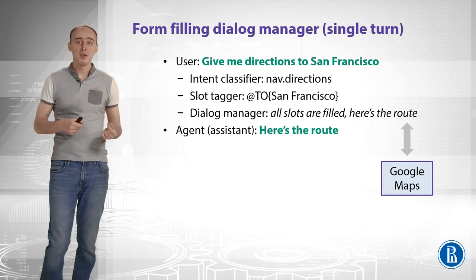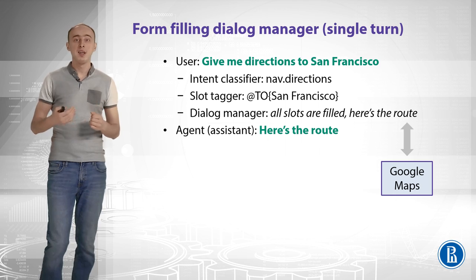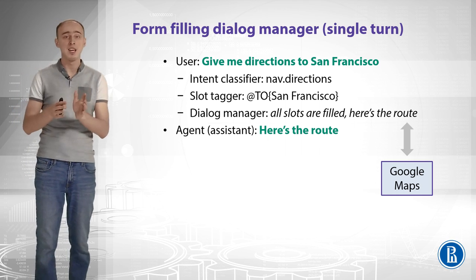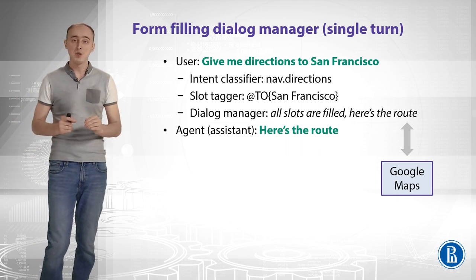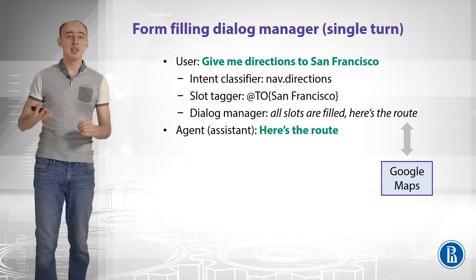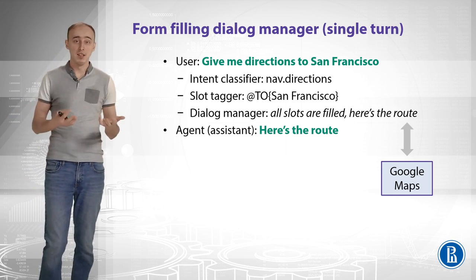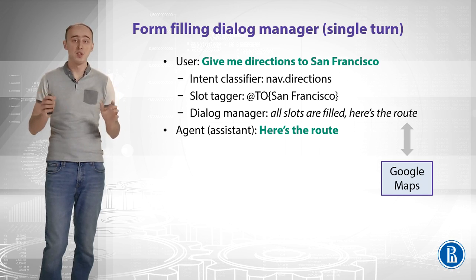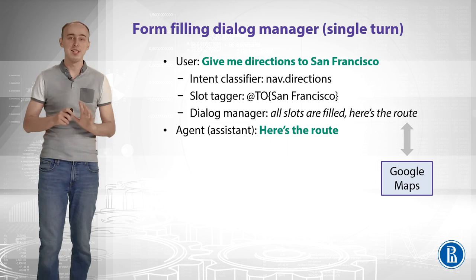Let's see how a form-filling dialog manager can work in a single-turn scenario — where we give a single utterance to the system and it outputs the result right away. The user says: 'Give me directions to San Francisco.' We run our intent classifier — it says 'navigation_directions.' We run the slot tagger — it says San Francisco is the value of slot 'to.' The dialog manager sees that all slots are filled, queries Google Maps, and outputs: 'Here is your route.' That was a simple single-turn dialog.